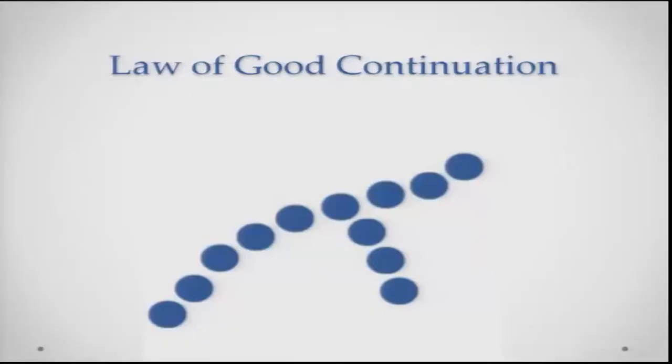Another law they gave us is called the law of good continuation. We are inclined to link individual elements so that they form a continuous percept rather than a broken percept. Looking at this figure, you will see there is one line going from the end all the way to the top, and there is another slanted line joining it. I might argue that the line starting at the bottom kind of bends down, and there is another line which kind of joins slightly later.